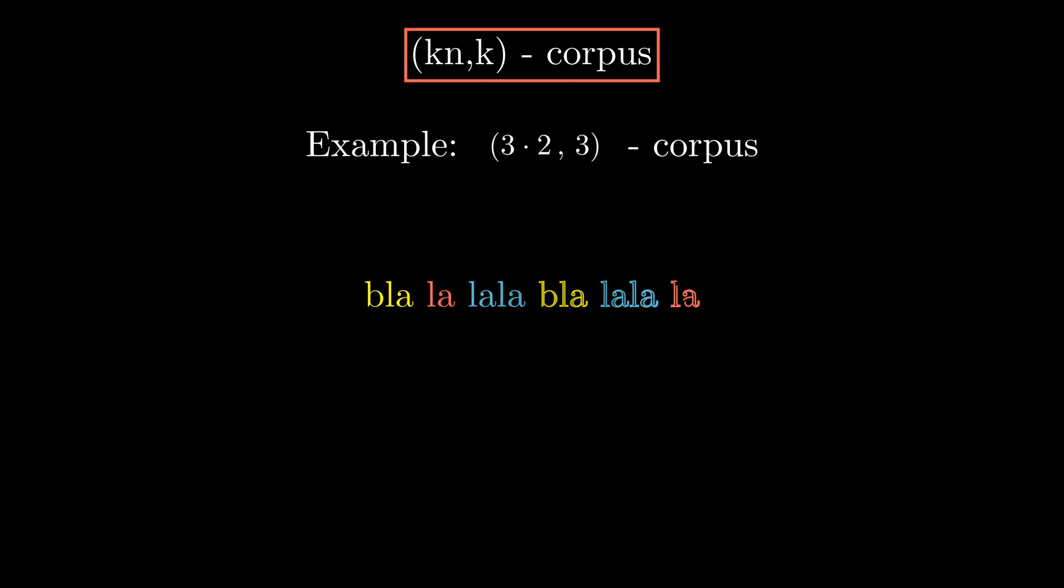Let's begin with a simplified problem. Consider a corpus, where every word repeats the same number of times. Here, for instance, three types repeat two times each. If we randomly pick one word at a time, a recursive relationship comes up.